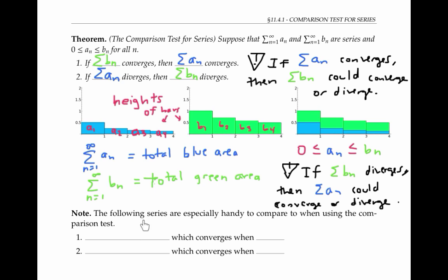The following series are especially handy when making these comparisons. First, the geometric series — the sum of a times r to the n — which converges when the absolute value of r is less than one. And second, the p-series — one over n to the p — which converges when p is greater than one.